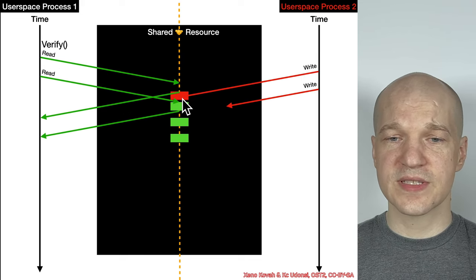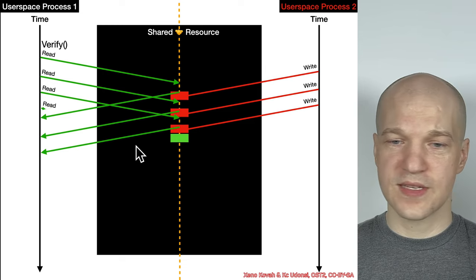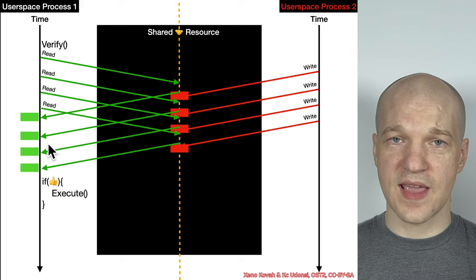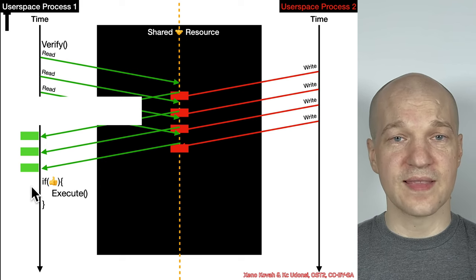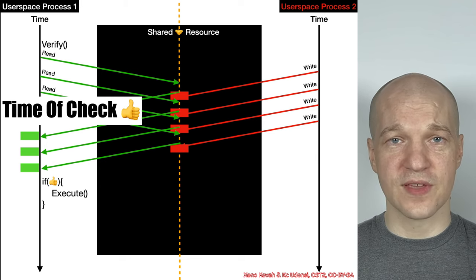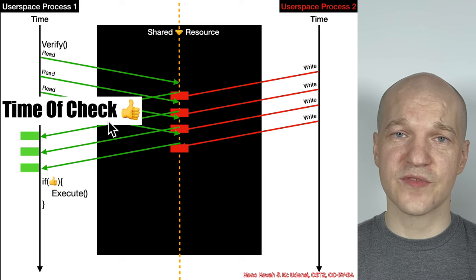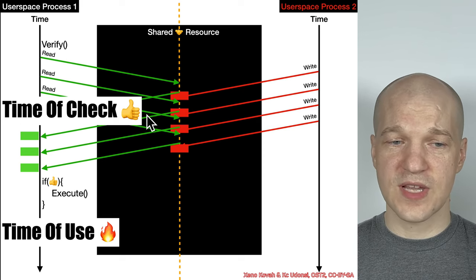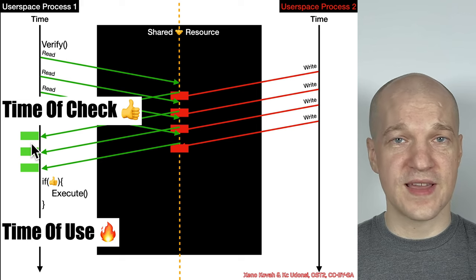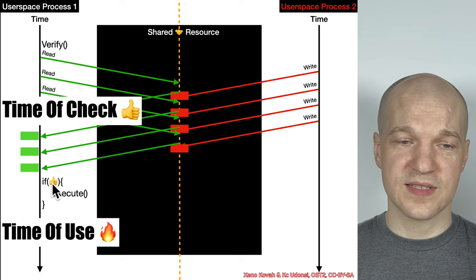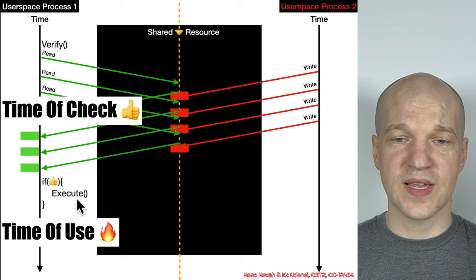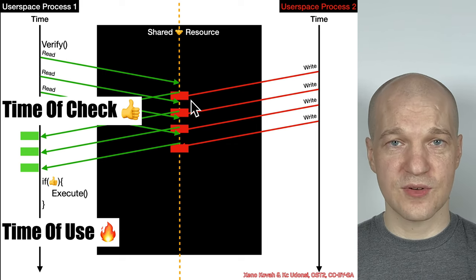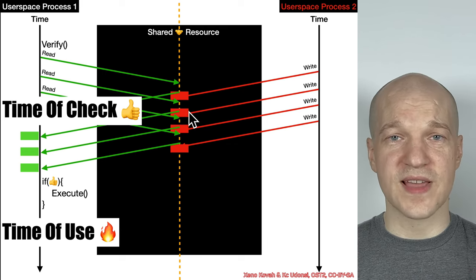The first legitimate process reads to try to verify some data, and it's clean to start with. But then the attacker writes malicious data in there. At the time of those reads, everything was clean, but at the time of usage, everything was dirty. This is a time of check, time of use vulnerability — at the time of check everything read as non-malicious, but if there's a verify function followed by an execute-in-place function, then by the time it starts to execute in place, it has been filled in with malicious data.